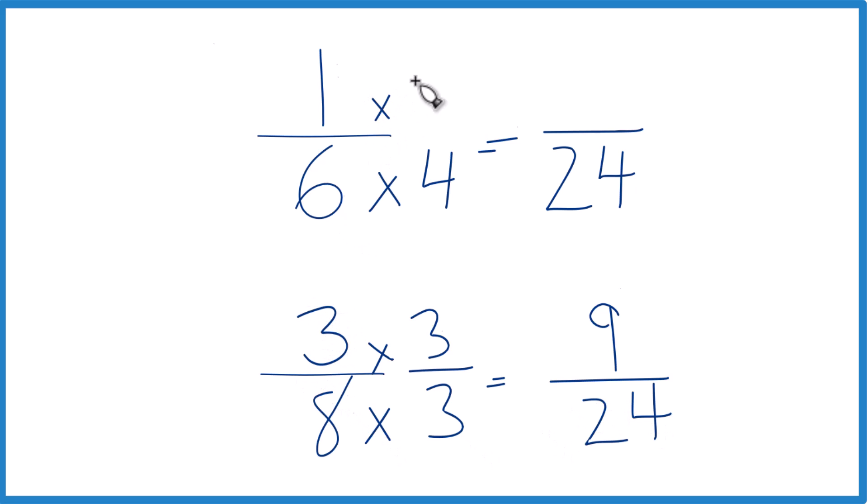Up here, multiply by 4, we get 4/24. And now we have the same denominators. We can compare the numerators, figure out whether 1/6 is greater than, less than, or equal to 3/8. Let's do that.